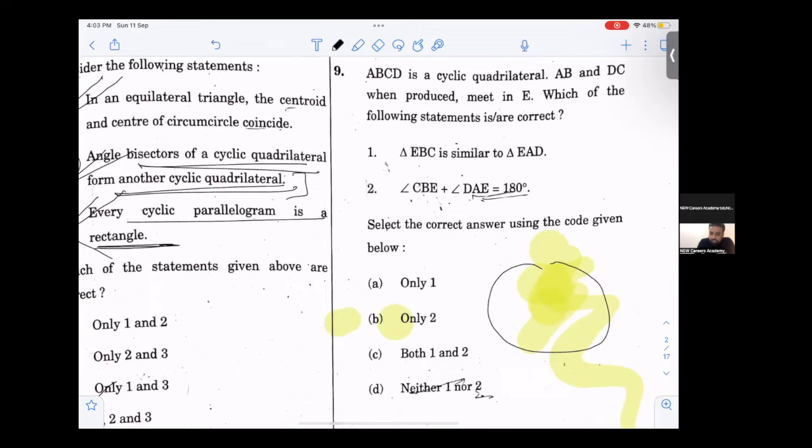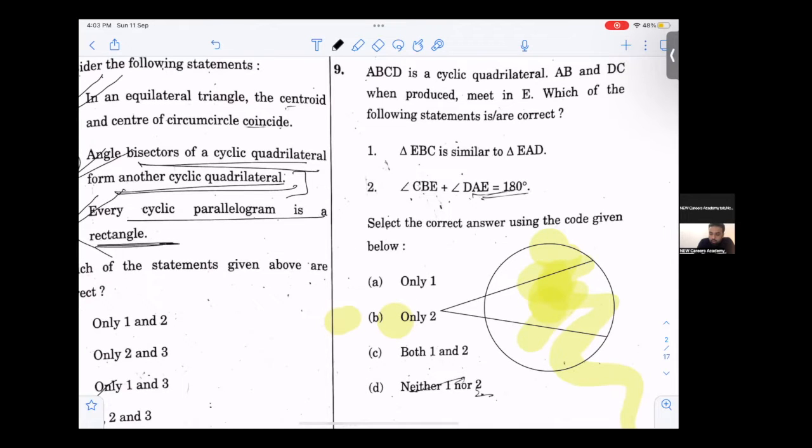ABCD is a cyclic quadrilateral. AB and CD produced meet at E. Again, this is a cyclic quadrilateral. ABCD is a cyclic quadrilateral.